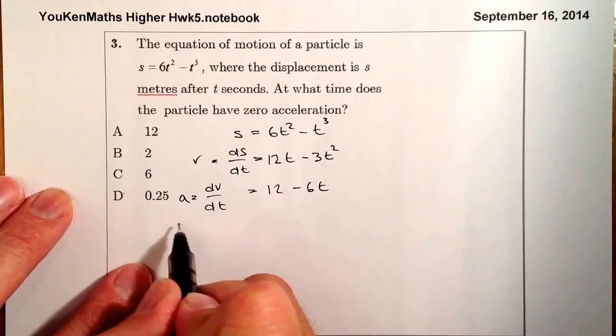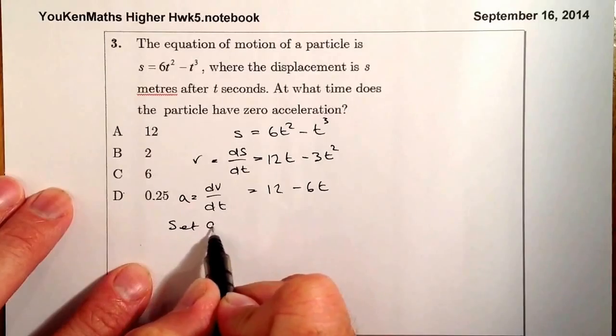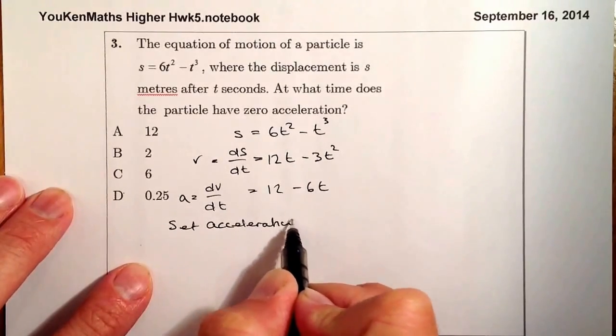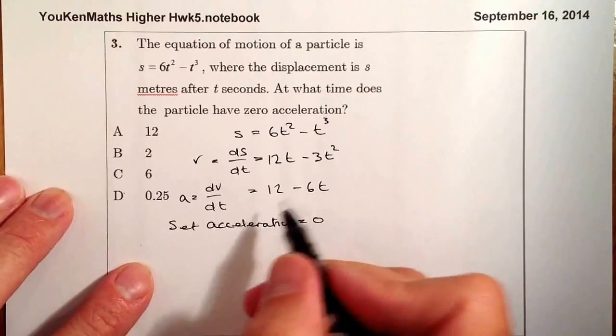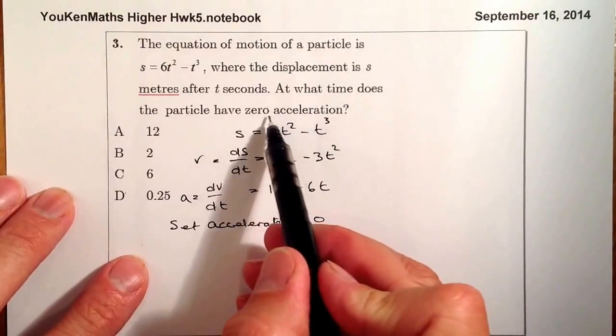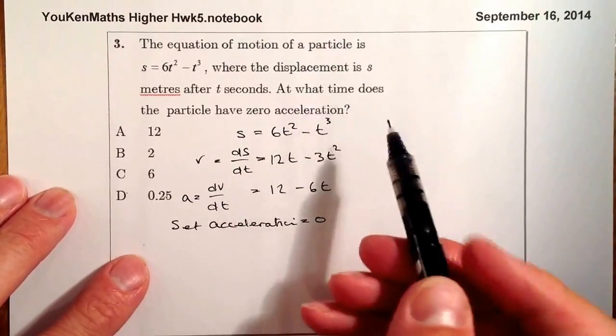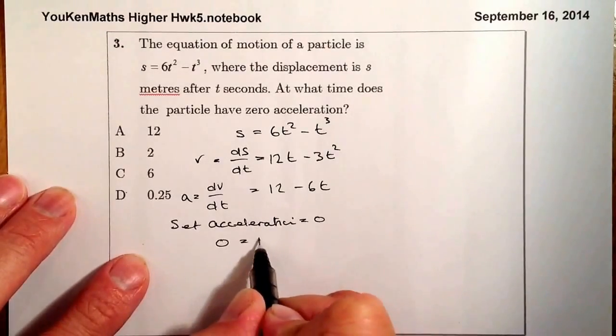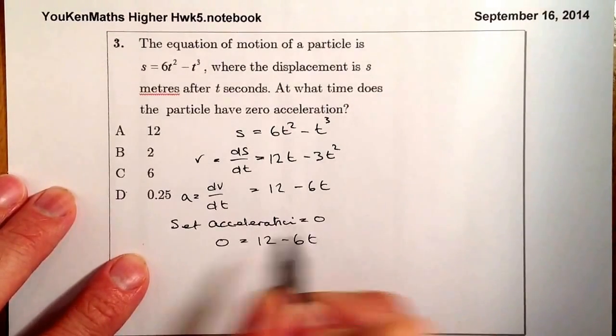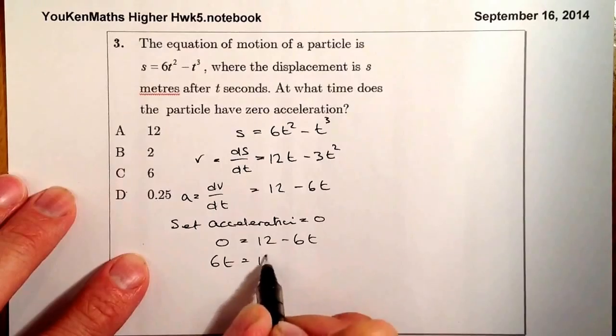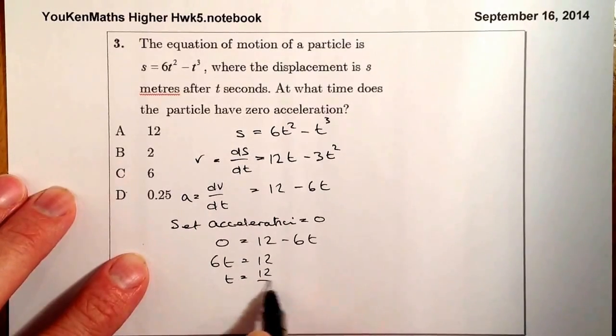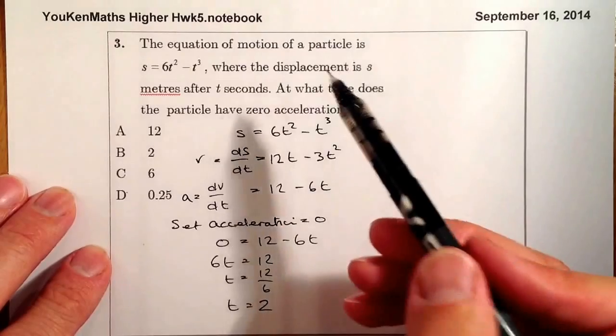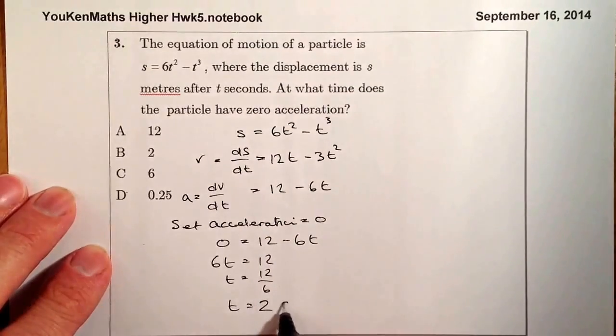Then I'm going to set acceleration equal to 0. I'm setting that equal to 0 because I have to work out when it's got 0 acceleration, and I'll find out the time once I do that. So 0 equals 12 minus 6t. Take the 6t over to this side, and t equals 12 over 6. So t equals 2. We're working in seconds, so that'll be seconds.